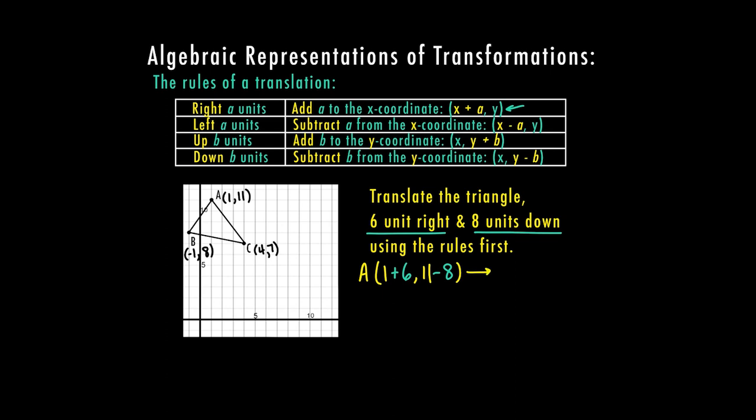This gives me my new A prime. Anytime you translate, reflect, or rotate a position, your new position is called the new image and we call the points prime. So A prime is at 1 plus 6 equals 7, and 11 minus 8 equals 3. I can go to my graph and plot A prime at (7, 3).